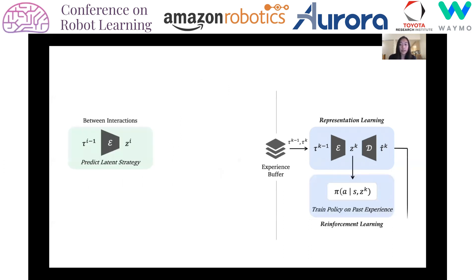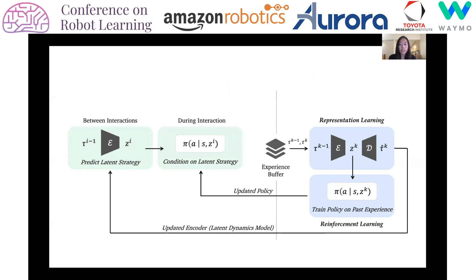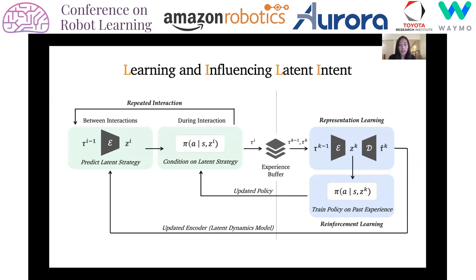Putting all of this together, during a new interaction, the encoder predicts the other agent's latent strategy. The ego agent carries out the policy conditioned on this prediction, and this process repeats. We call this whole framework Learning and Influencing Latent Intent, or LILY.